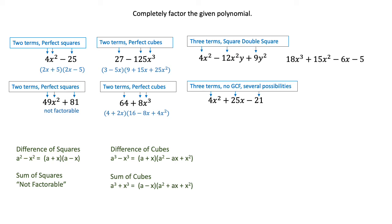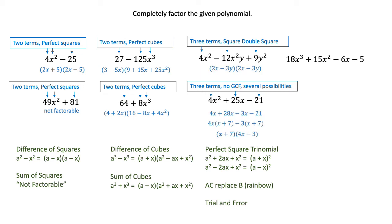In the second case we've got three terms and we don't have a GCF. There are several possibilities, so for that one you could use the AC method or trial and error. That's how I would factor those. My preference for the second one is AC method because you just can't go wrong with that.